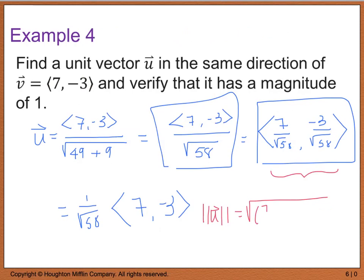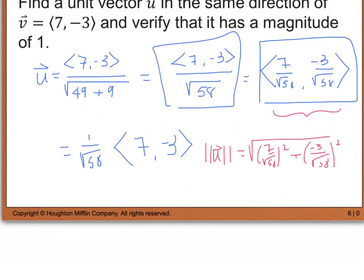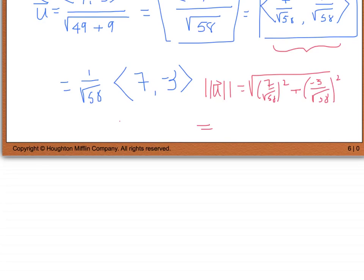which means I'm going to take the square root of (7/√58)² and I'm going to add that to (-3/√58)². Well, when I go to simplify, this is going to give me the square root of 49/58 plus 9/58, which gives us the square root of 58/58 which equals 1. So we just proved that we had a unit vector then.